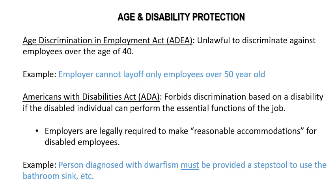The first piece of legislation was called the Age Discrimination in Employment Act, or the ADEA. It made it unlawful to discriminate against an employee if they were over the age of 40. There is a clear cutoff — you can't discriminate against somebody if they're over the age of 40.